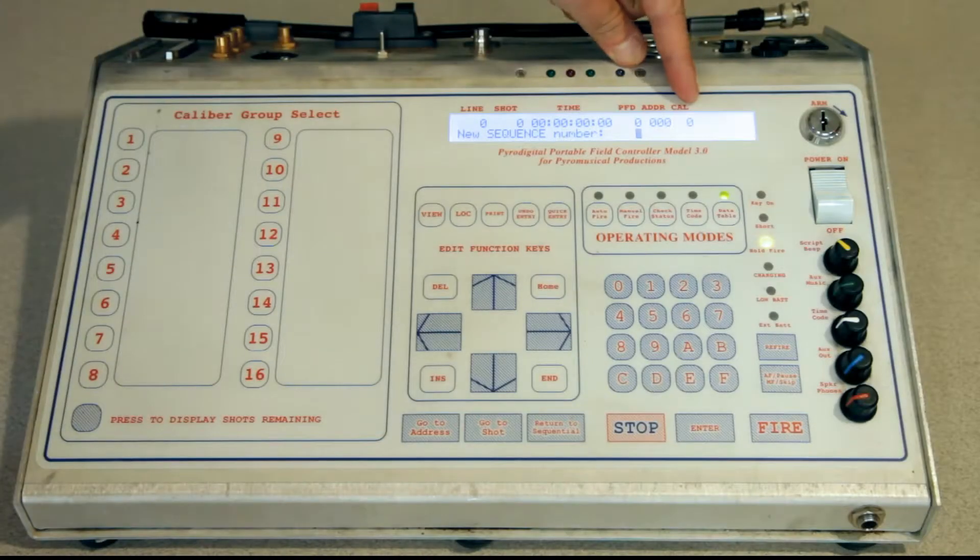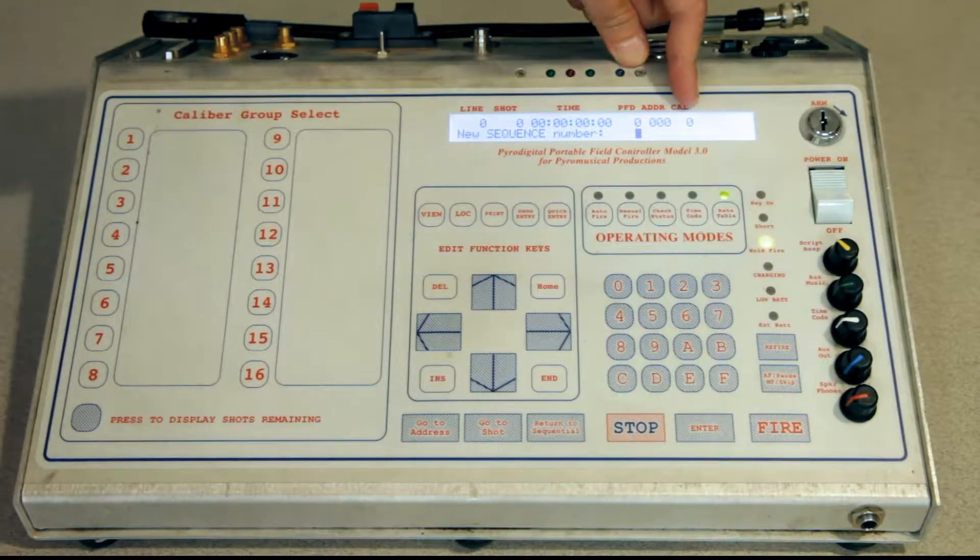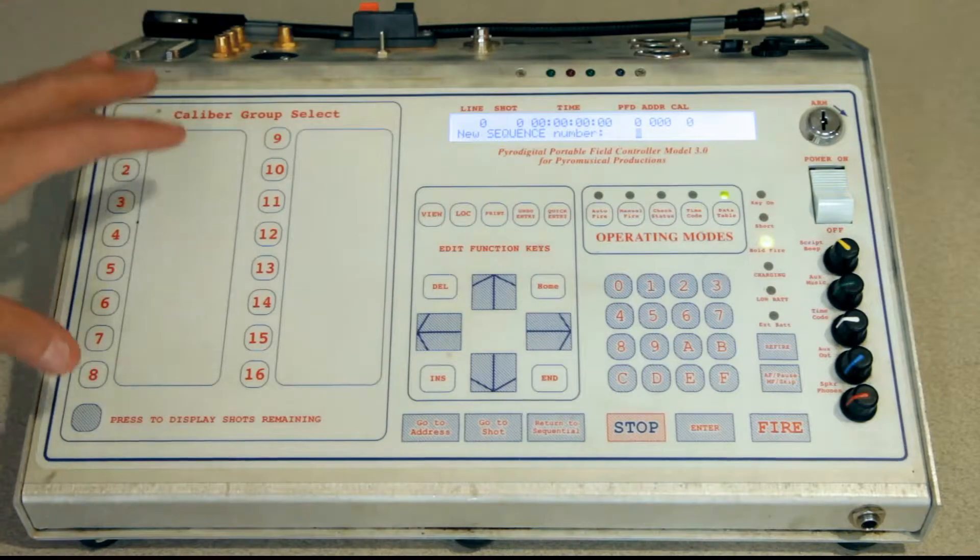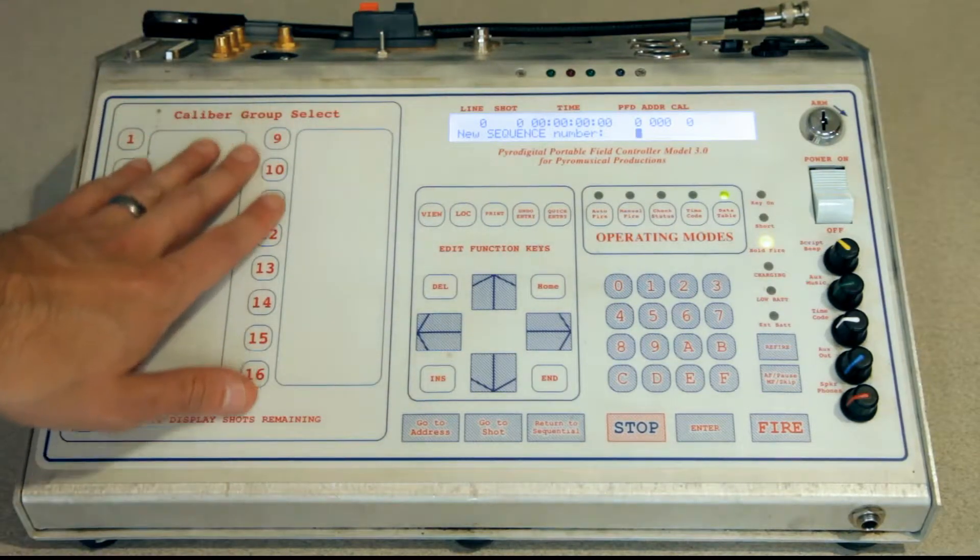Caliber number can mean two different things depending on if you're in manual fire or auto fire mode. In manual fire mode, the caliber number corresponds to a caliber group select.